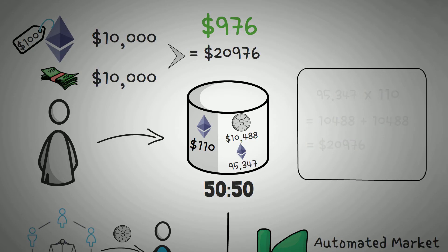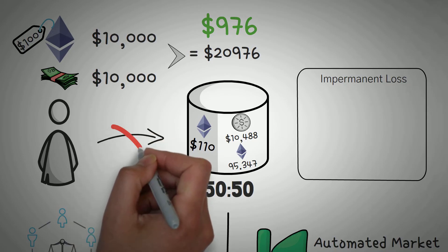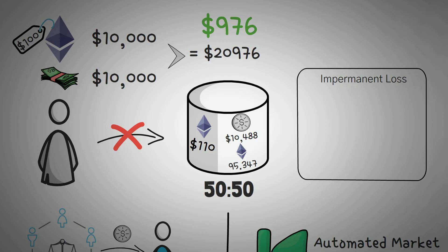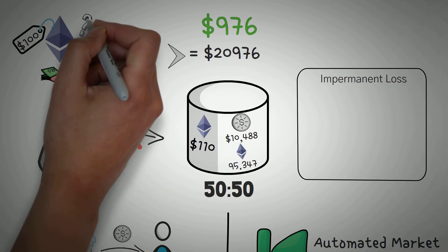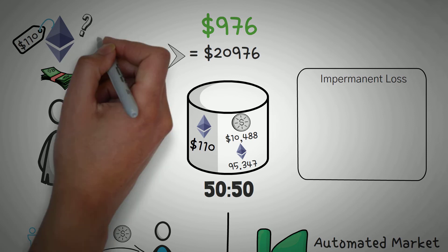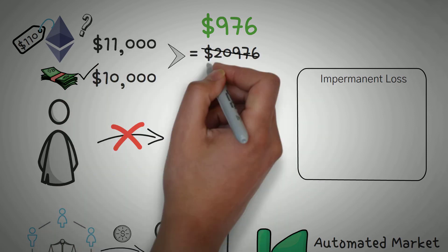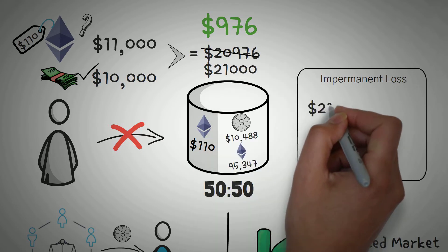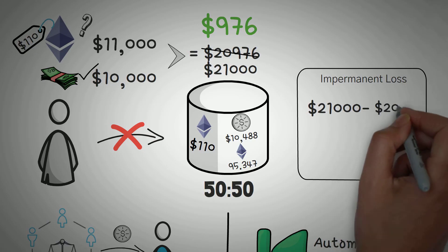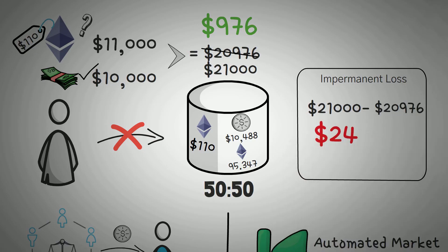So the liquidity provider now has a total value of $20,976, meaning he made a nice $976 because Ethereum went up. He made some pretty decent money today. However, to calculate impermanent loss, we need to calculate how much money he would have had if he didn't invest in the liquidity pool and just held his stablecoin and Ethereum in his wallet instead. So obviously, he still would have had his initial $10,000, but if he held his 100 Ethereum, that 100 Ethereum would now be worth $11,000. So he would have had a total of $21,000 if he just held it. This means we can calculate his impermanent loss to be $21,000 minus $20,976, which is $24. So in short, this liquidity provider would have made more money if he just held on to his Ethereum and stablecoin.